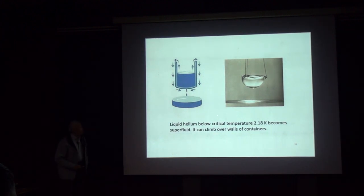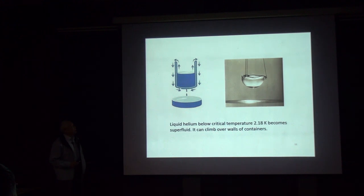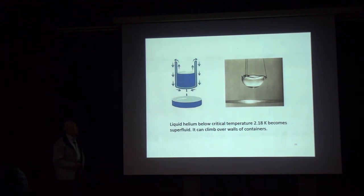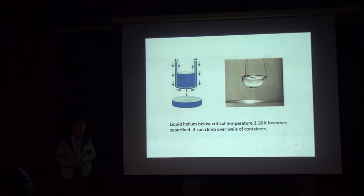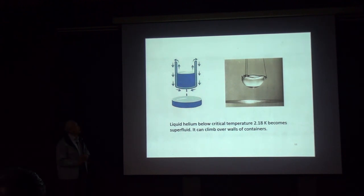One of the most astounding manifestations of superfluidity is liquid helium. Below 2.18 degrees, helium becomes a superfluid; put it in a vessel and it climbs the wall and drips down. Normally a liquid coats a wall with a film whose thickness decreases exponentially with height. In a superfluid, the film is very thick, decreasing only as one over the square of the height, so it can climb all the way up and over.